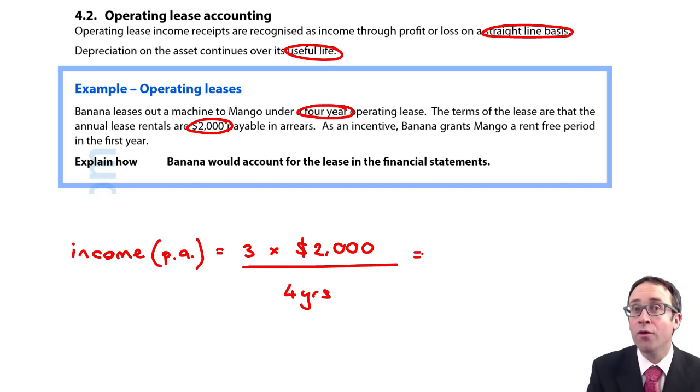So three times two is six divided by four is $1,500 per annum.